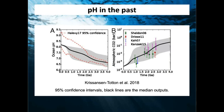To put today's pH of about 8.17 into context, over geological time — millions of years — there is a strong relationship between pH and carbon dioxide in the atmosphere. Whenever carbon dioxide in the atmosphere has increased, the pH has decreased, and that's exactly what we're seeing even on a faster timescale over the last 200 years.